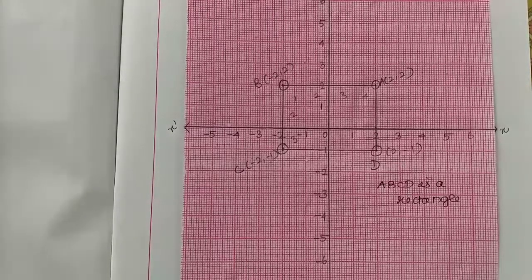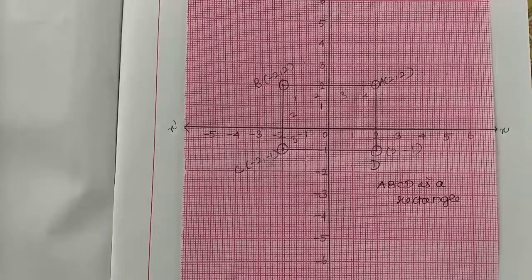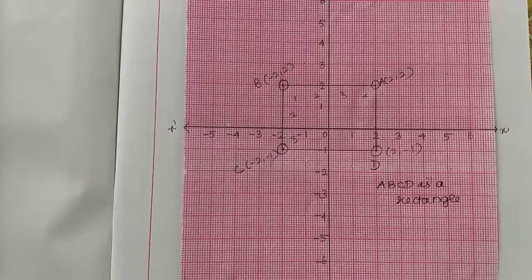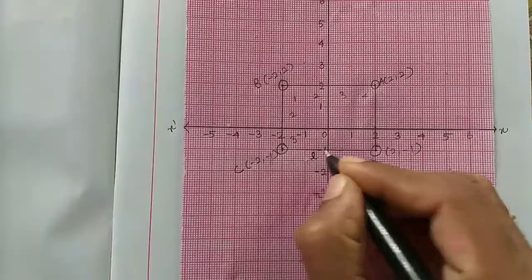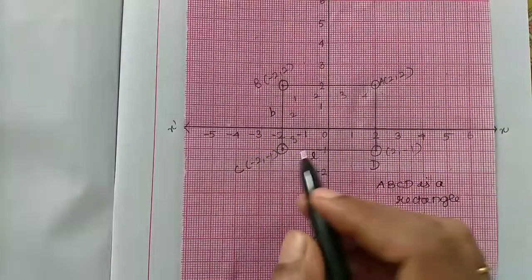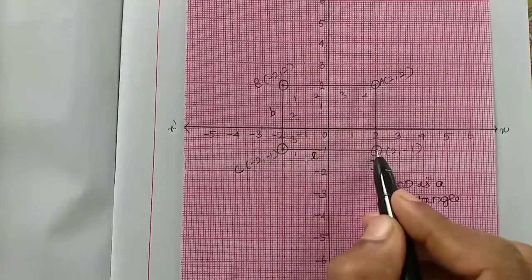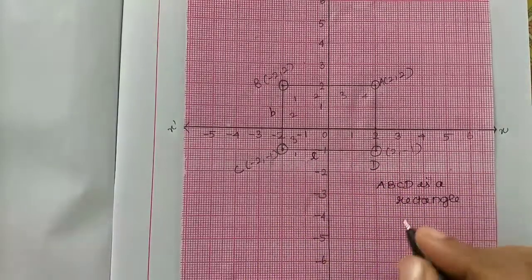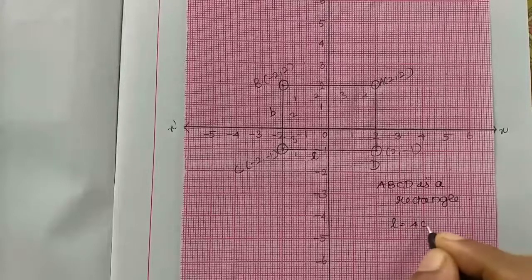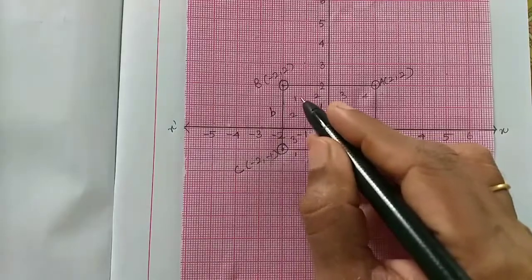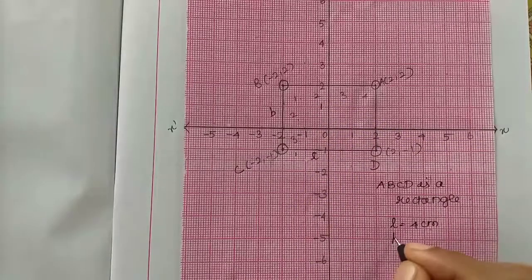Then you have a question: can you find the length and breadth and area of the rectangle? So length, breadth and area. Length is mostly here and breadth here. Length is 1, 2, 3, 4, so there is 4 centimeter length. Then breadth here is 1, 2, 3, 3 centimeter breadth.